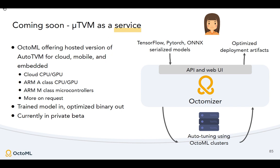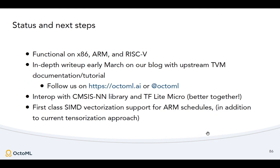OctoML is also trying to make this even easier by wrapping it in a service. We have a homegrown cluster of ARM Cortex-M devices, ARM-A class devices, and others on premises, so you can one-click give us a trained model and we optimize, compile, and package it and hand it back to you — making TinyML more accessible to a broader variety of data scientists and software engineers. We're currently in private beta, so come talk to me if you're interested. This is all running on x86 as a micro device for debug, and we have ARM and RISC-V implementations. An in-depth write-up is coming in early March with an upstream TVM PR, documentation, and scripts — all going open source.